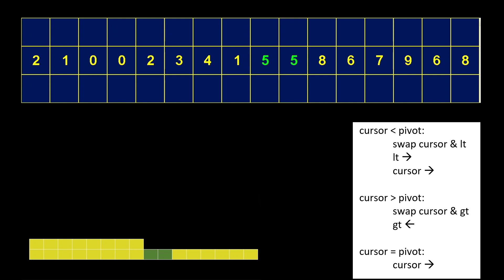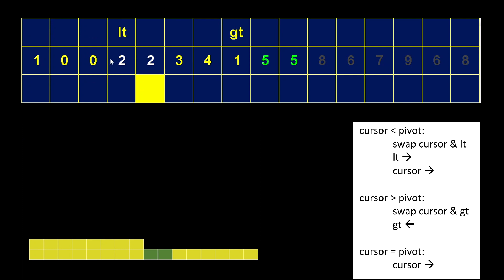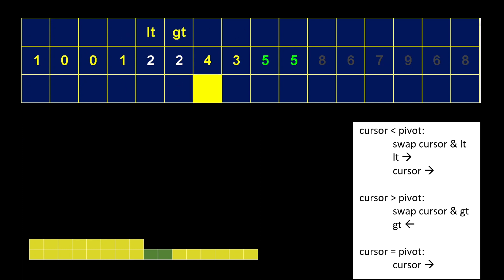Now we're focusing on the left group — we've grayed out the other numbers for now, which doesn't mean we're done with them, just that we're not looking at them. We are running the partition on this portion of the array. Now our pivot is two, simply because two is the very first number — that's always going to be our pivot. We see there's another two, so that's colored in white as well. We start off equal to the pivot, so we move our cursor to the right. We're now less than the pivot, so we swap the cursor and LT, move LT to the right, move the cursor to the right, and we're going to continue doing these steps.